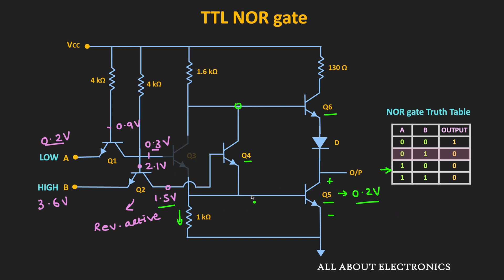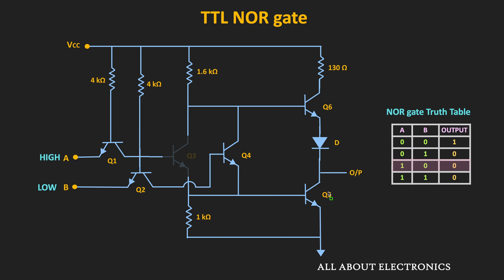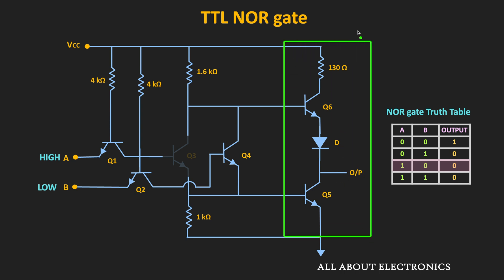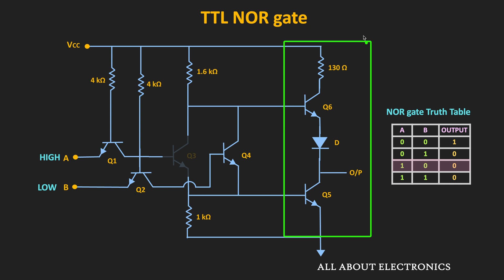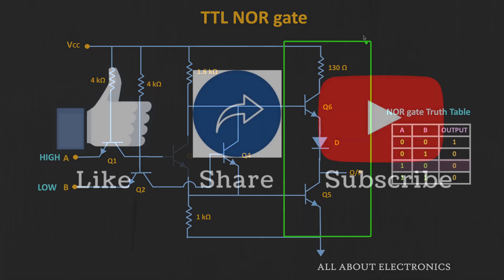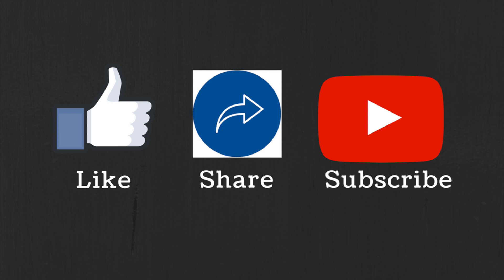So far in our discussion, if you observed the last stage of the TTL gate, that was the totem pole stage — therefore these logic gates are known as TTL logic gates with the totem pole output. In the standard TTL gates, apart from the totem pole stage, we also have two other versions: the open collector gate and the tri-state gates. In the next video, you will learn about these two types. I hope this video helped you understand the working of the TTL NAND gate and the NOR gate. If you have any questions or suggestions, let me know in the comments below. If you liked this video, hit the like button and subscribe for more such videos.